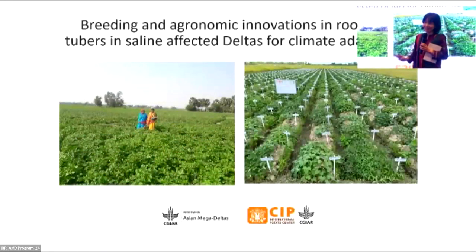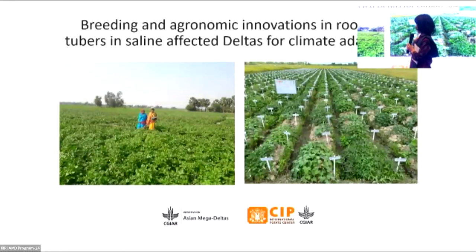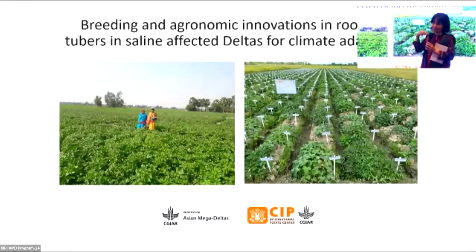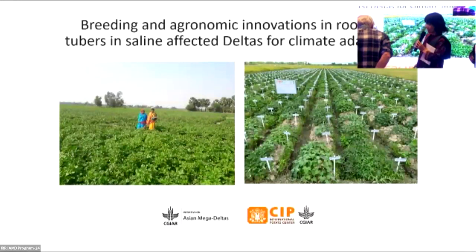Good morning everyone. We are going to introduce our CIP breeding innovations. Our colleague Ulfgan is here from Peru and can complement our presentation. The photo on the left is West Bengal zero-tillage potato growing, and on the right is currently ongoing breeding selection of sweet potatoes. We are scaling zero-tillage potato in our working area in the southern delta of Bangladesh, and CSSRI is also introducing this technology in West Bengal. We are also trying to introduce it in Vietnam and Cambodia.